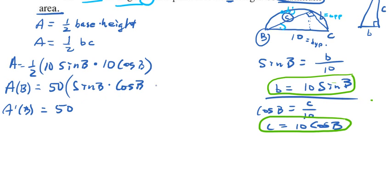And now we can differentiate. So the derivative of A is, well, that 50 is a constant, so we can just leave it out there and treat this product differently. So this is 50 times a product rule. Derivative of the first times the second is cosine B times cosine B, plus sine B times the derivative of the second, which is negative sine B.